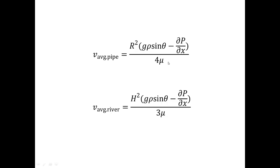A lower viscosity of the fluid also increases the average velocity. This is all intuitive, but wouldn't it be cool if we could actually model how the velocity profile looks like inside a pipe and inside a river? I'll do this using Mathematica.